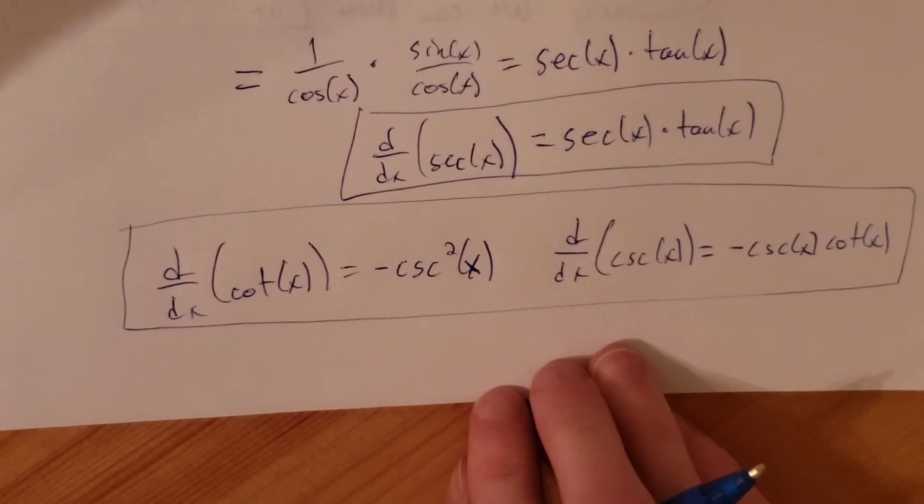Similarly, we can show that the derivative of cosine of x is negative sine of x. We'll go ahead and skip writing out the proof because it's done almost the exact same way as finding the derivative of sine of x. Let's do a couple of derivatives using that information.